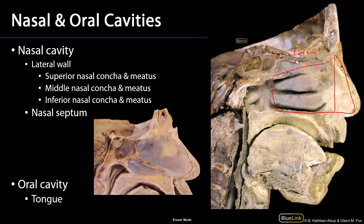There's the superior nasal concha, the middle nasal concha, and the inferior nasal concha. Now the superior and the middle are of the ethmoid bone, so oftentimes they'll be referred to as ethmo-turbinates, whereas the inferior nasal concha is its own separate bone.